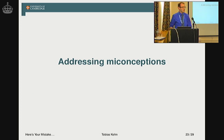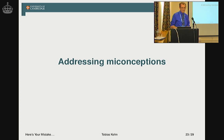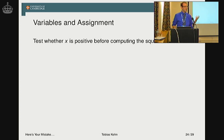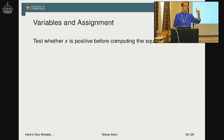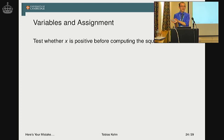The second thing I was thinking about is: can we do something about misconceptions — about what students have in their head about how Python works and how computers work? The one thing I really looked into is variables and assignments. I asked students to write a program that tests before computing the square root whether a number is positive or negative, and then decides whether to output a square root or an error message saying this is not possible.